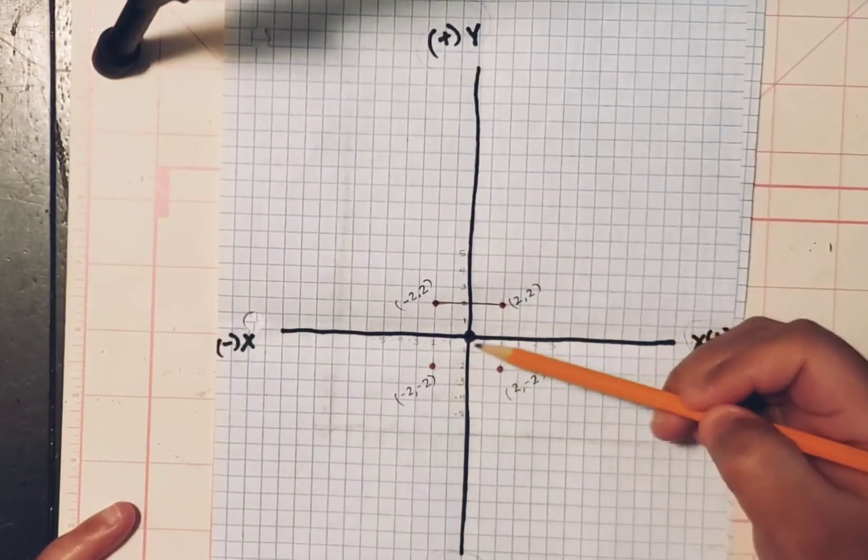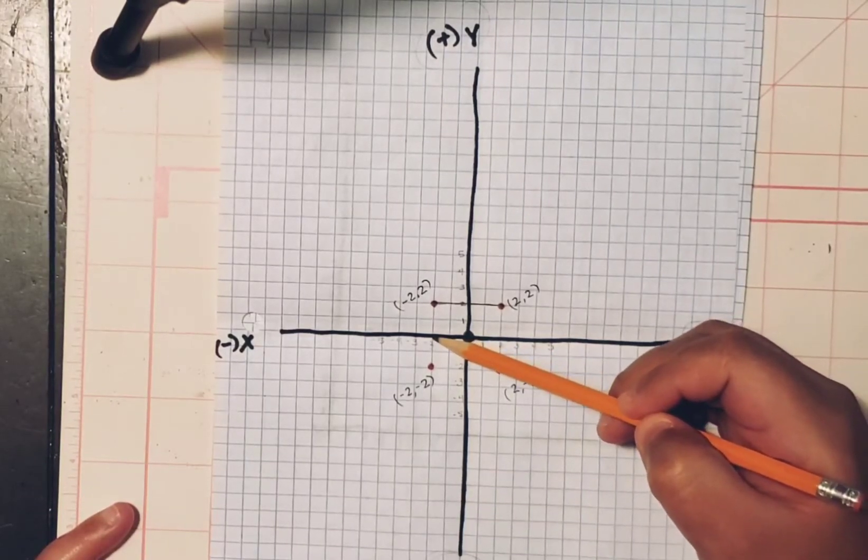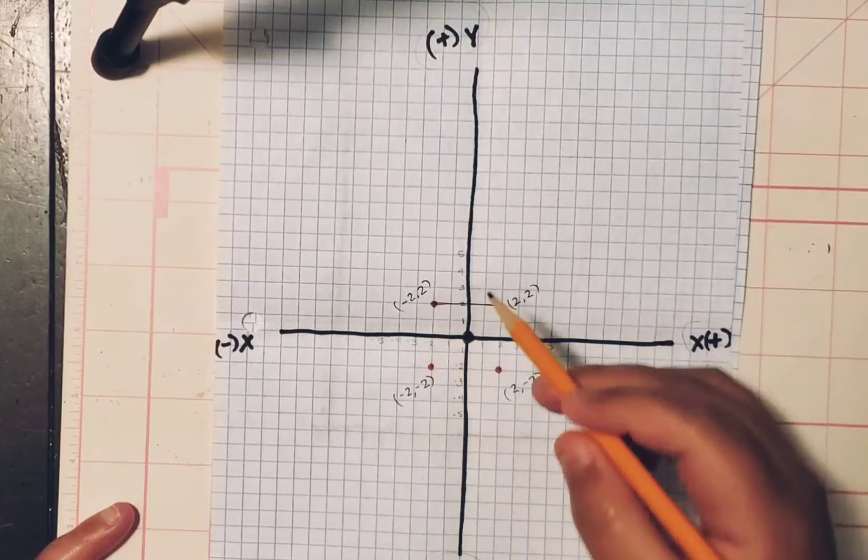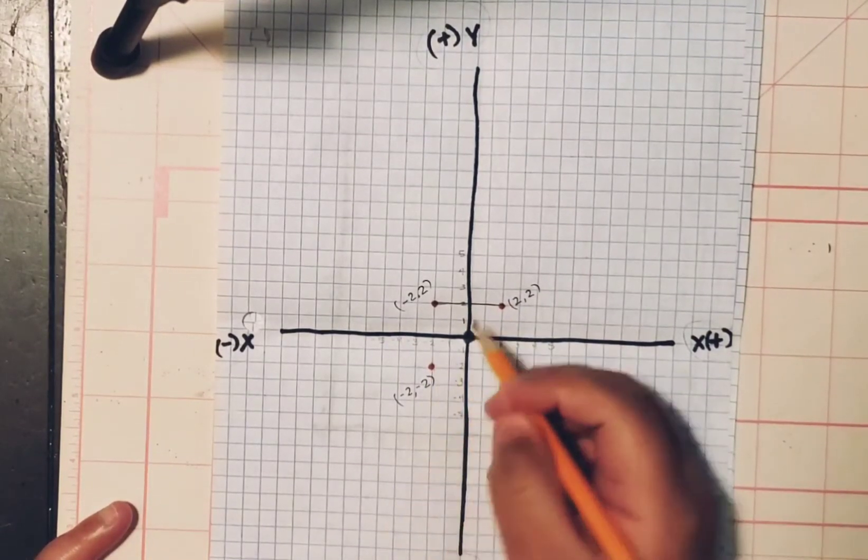For this point right here, X again, we move to the left, two spots. So negative two. And we go down two spots. Negative two to a negative two.